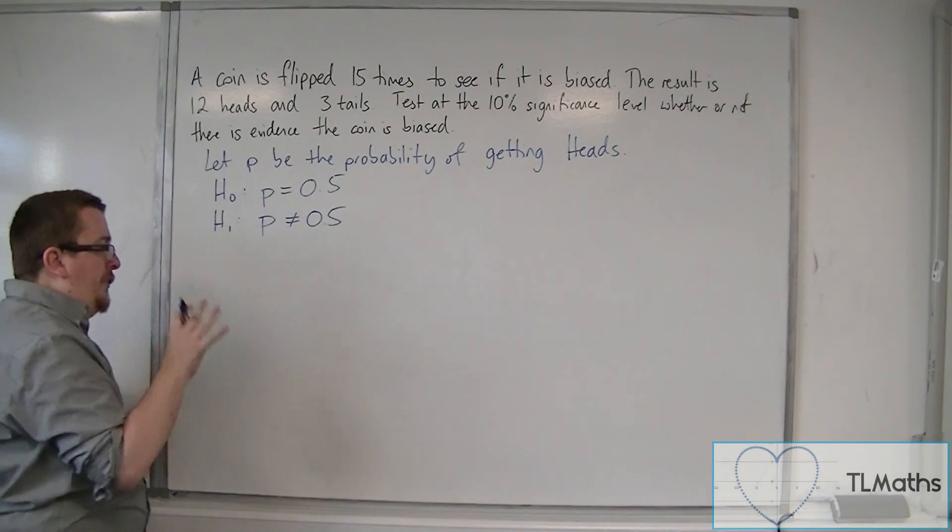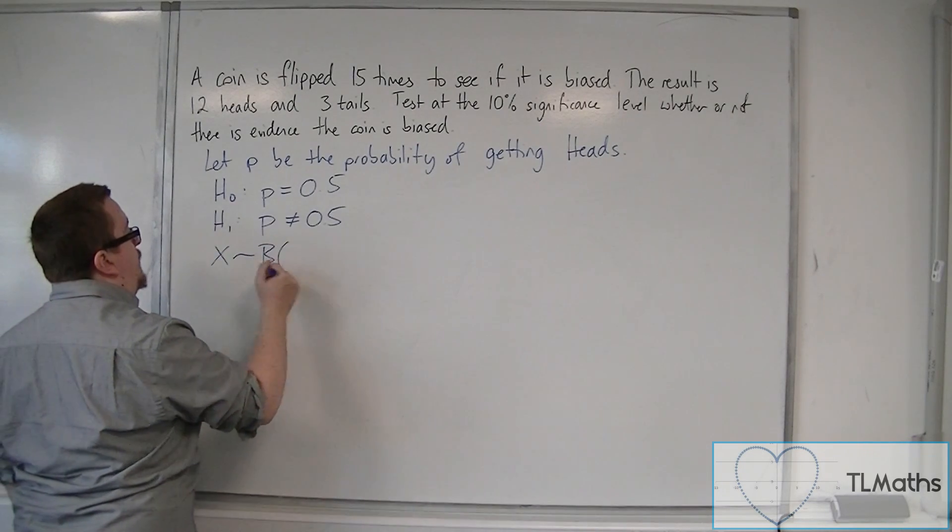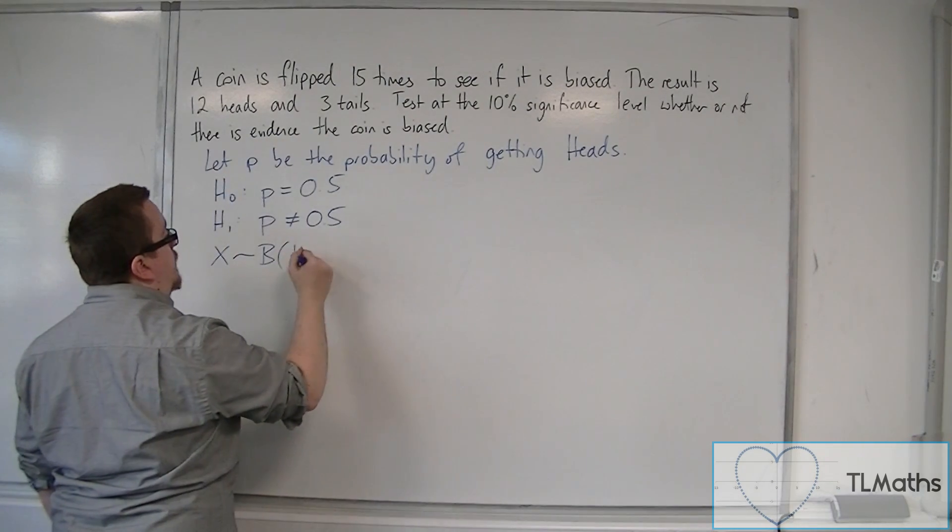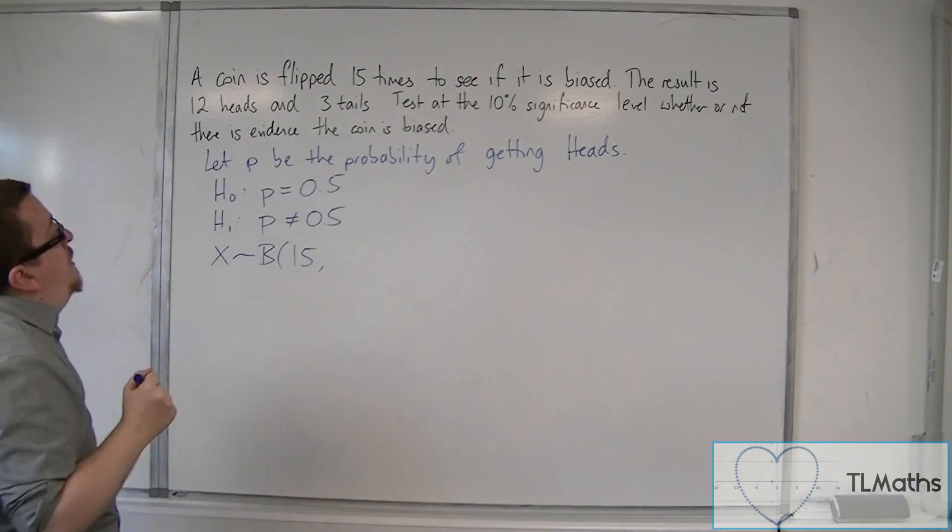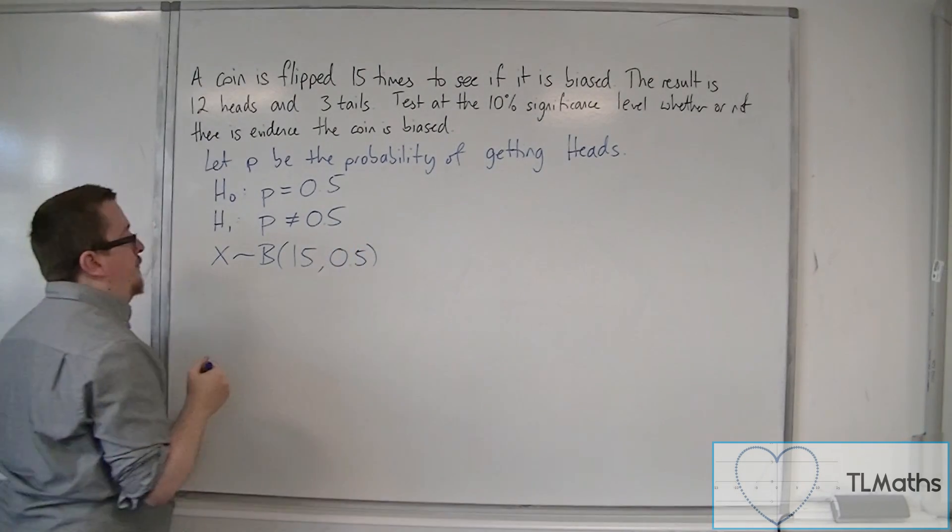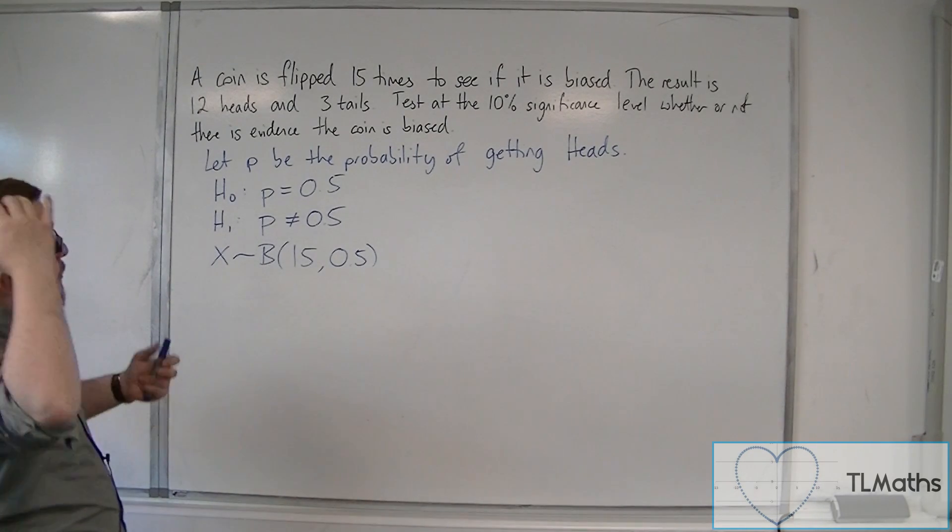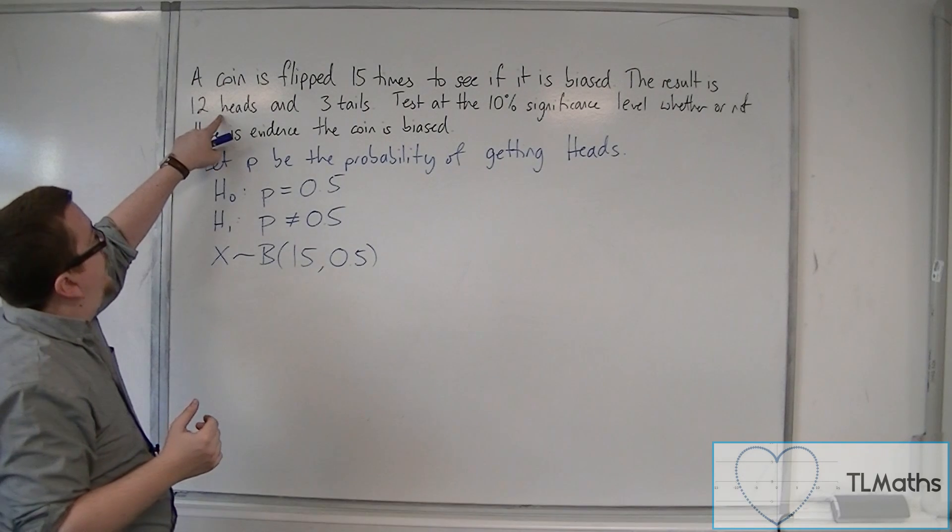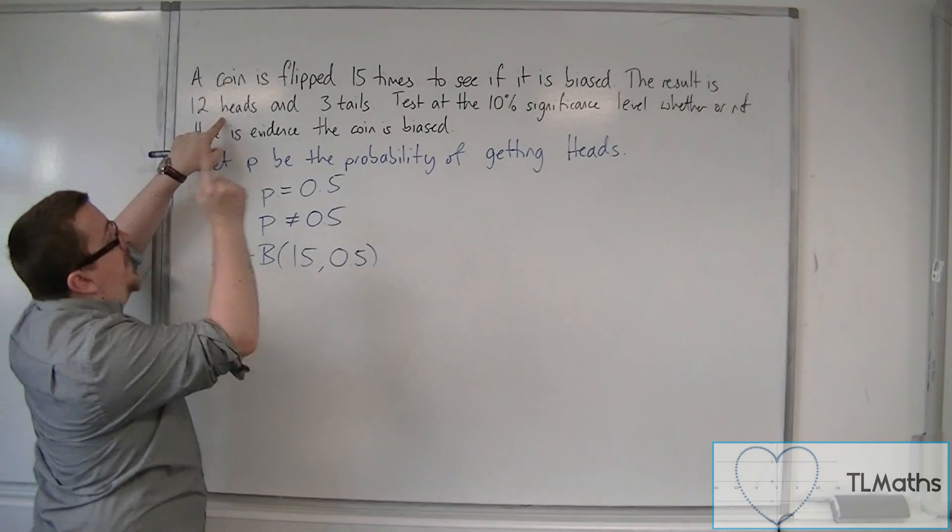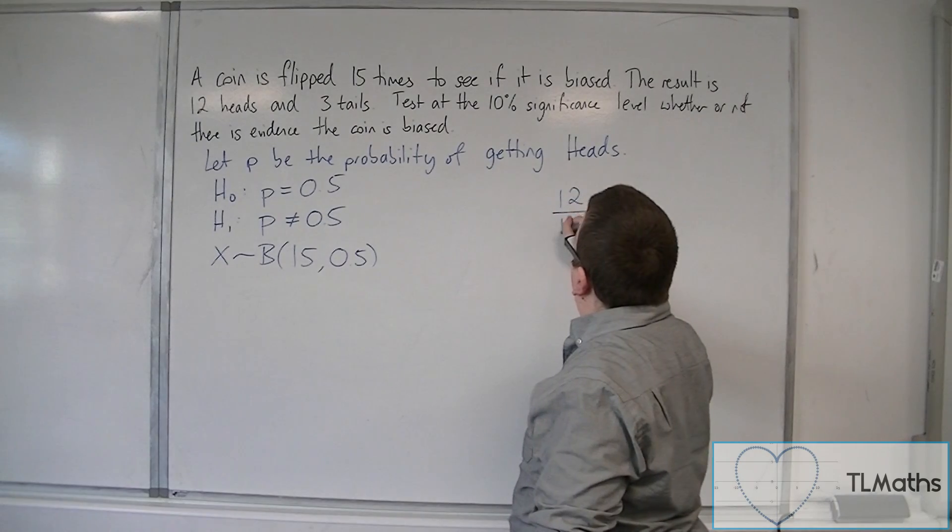So assume that H0 is true. Set up a binomial distribution. So in this case, we're looking at a binomial distribution with 15 flips of the coin and the probability of 0.5. Because we're looking at it from the point of view of heads, here we've got 12 heads out of 15. So 12 heads out of 15.